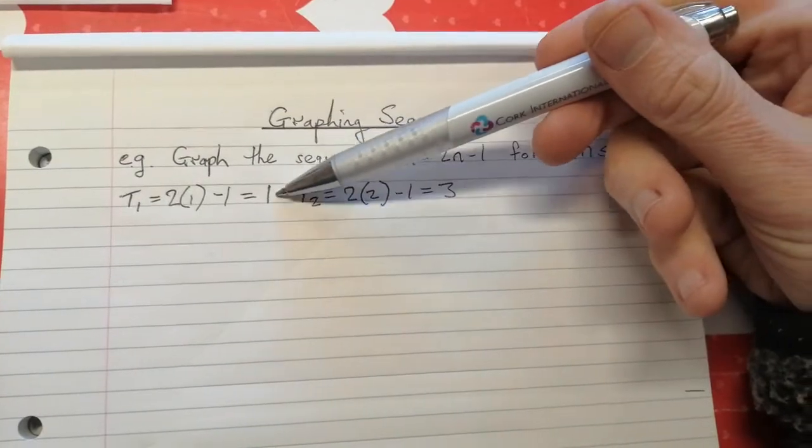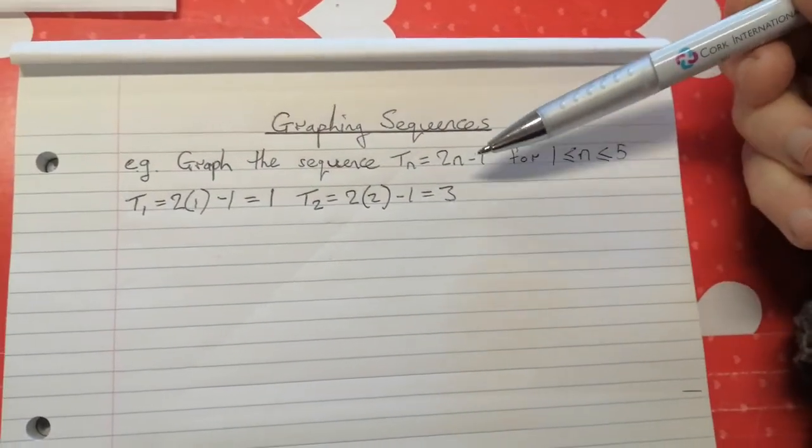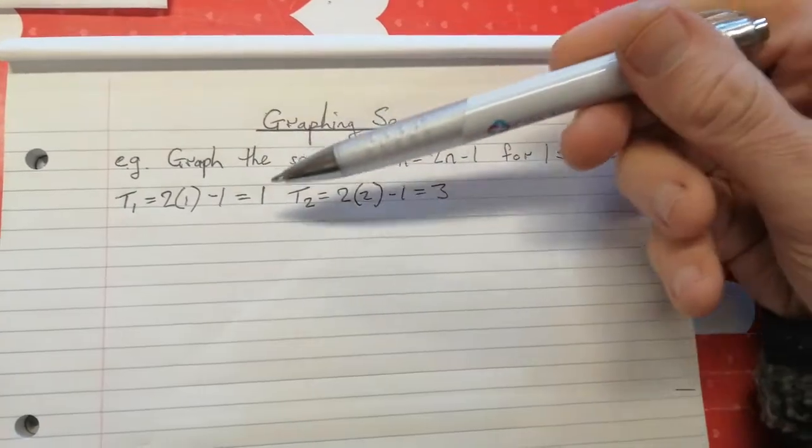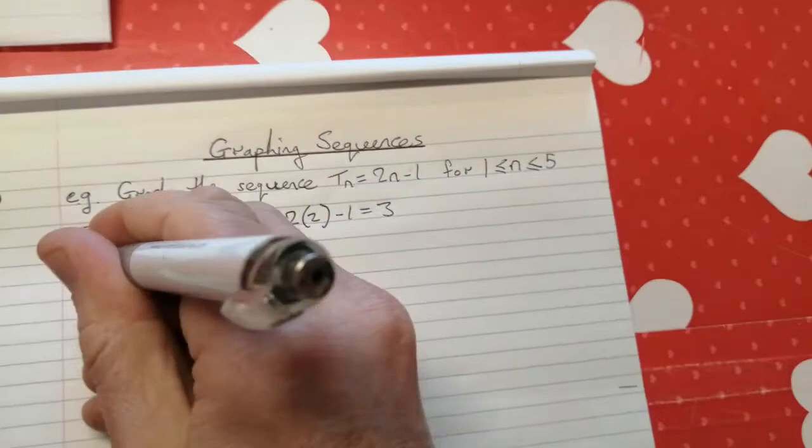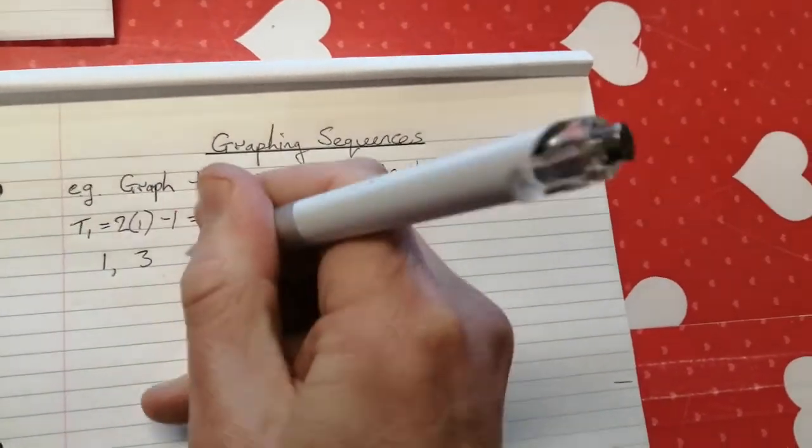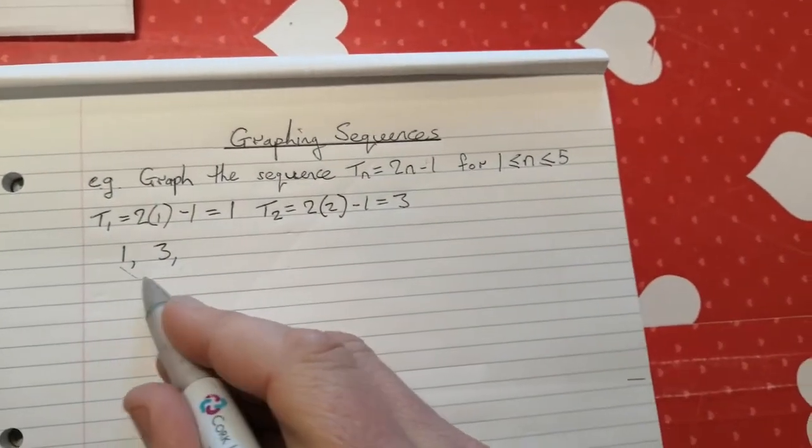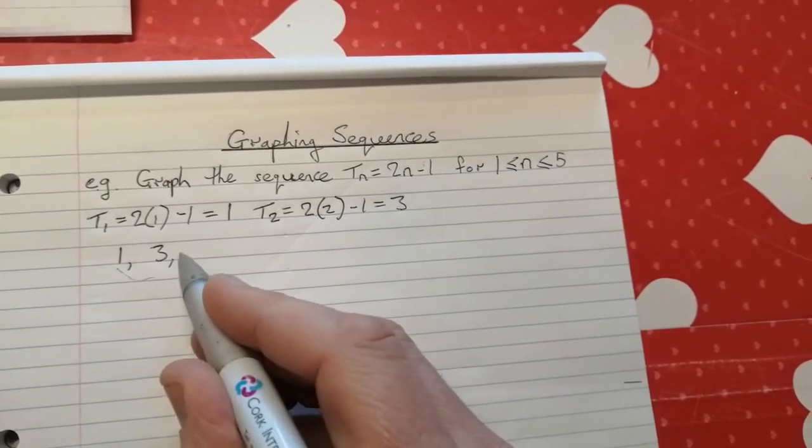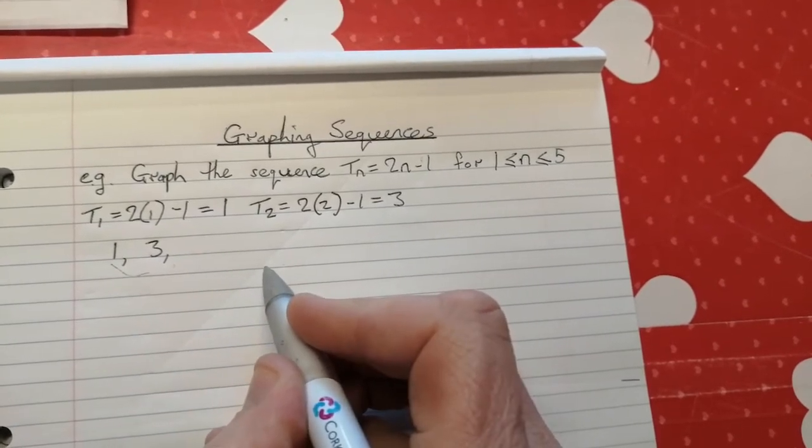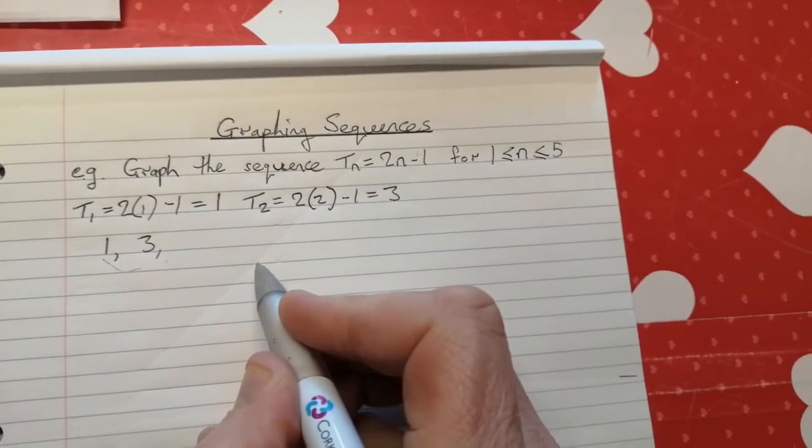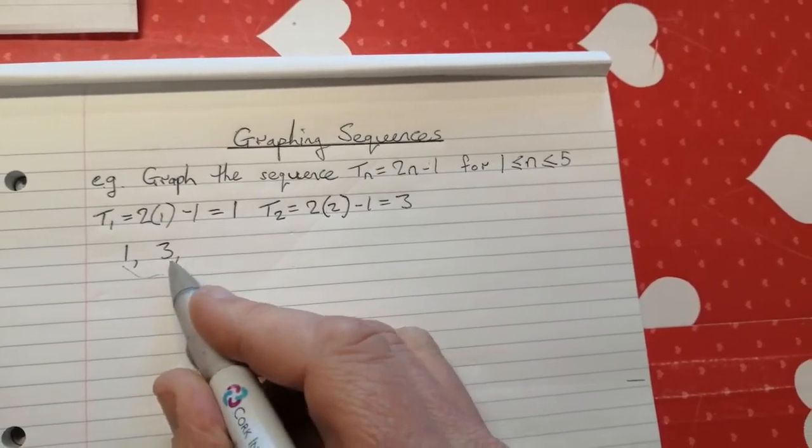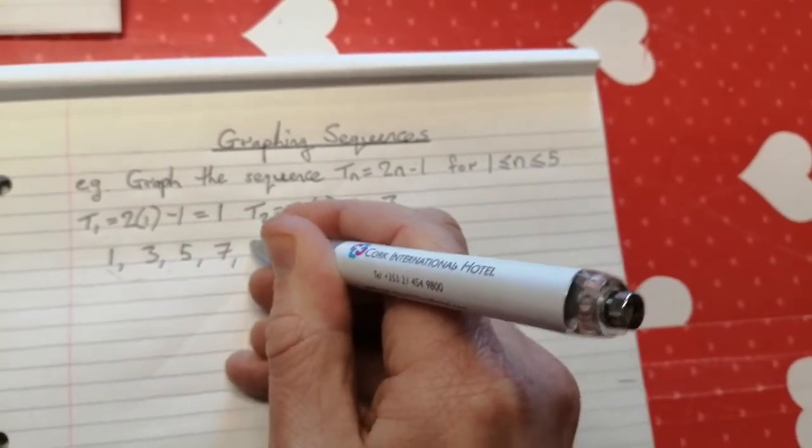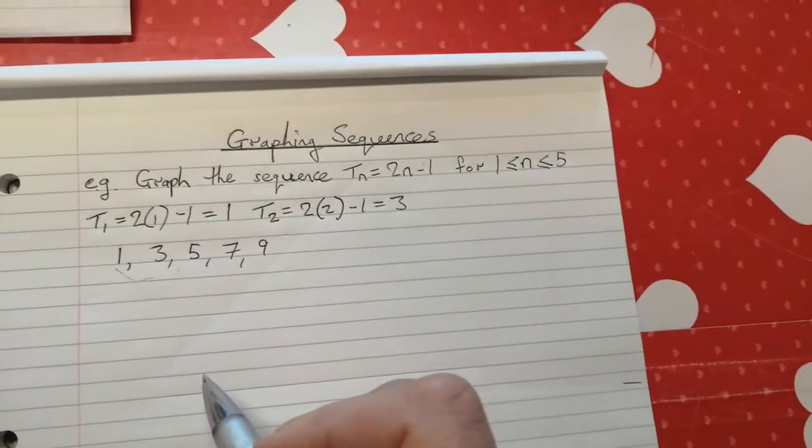If we have the first two terms, 1 and then 3, and we know because this is a linear sequence that the first difference is constant, it's the same all the way through. Well, then if term 1 is 1 and term 2 is 3, if the first difference here is 2, then all of these differences between these terms should be 2 if it's a linear pattern or sequence. So we know the next one is going to be plus 2 is 5, plus 2 is 7, plus 2 is 9, and there we have our first five terms.